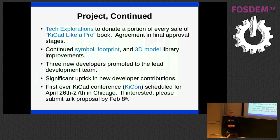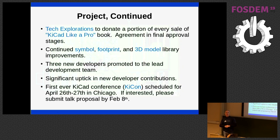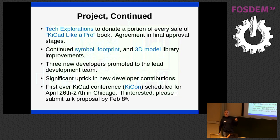And of course there's the never-ending improvements in our symbol, footprint, and 3D model libraries. If you look back at our libraries from version four and compare them to now — I think our library is up to like five or six gigabytes of download — and they're really high quality. There are actually more contributors to the library group than there are source code developers, which is phenomenal.